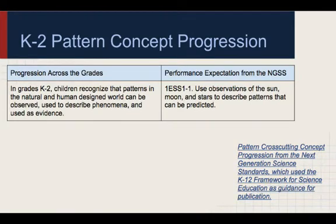The Next Generation Science Standards, published in 2013, released concept progressions for each of the cross-cutting concepts. Progression across the grades explains the grade band expectations for a specific cross-cutting concept, such as patterns. Performance expectations from the NGSS is one example of a grade band expectation for a core idea, not limited to just this one standard.